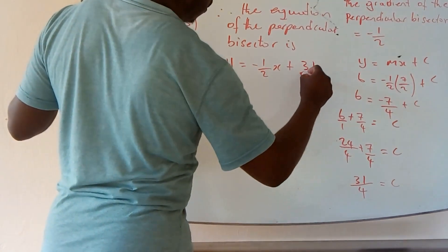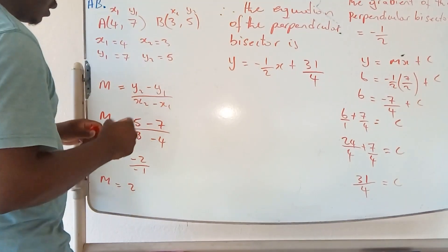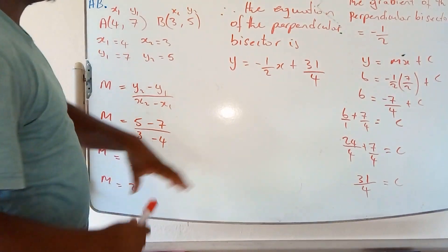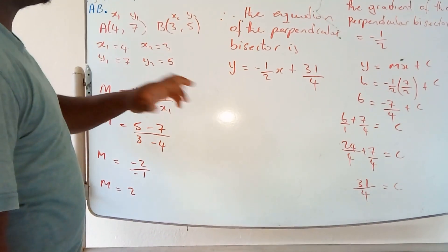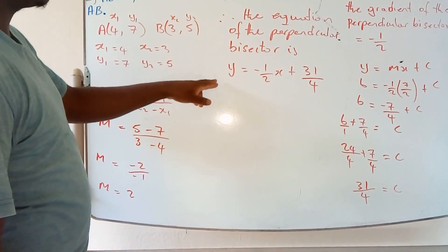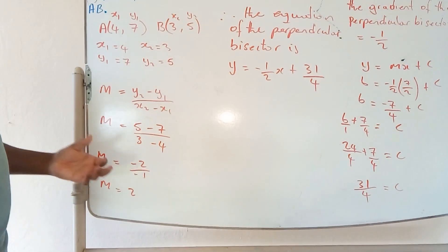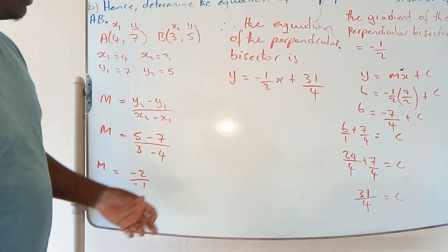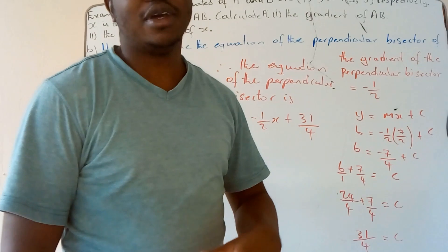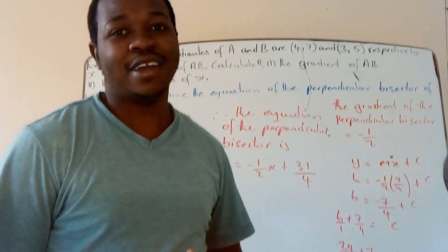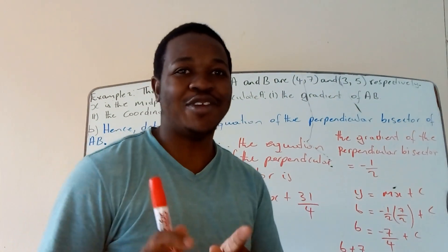The C value is 31 over 4. That is the equation of the perpendicular bisector. Thank you for watching. Please remember to like, subscribe, share, and do enjoy the rest of your day.